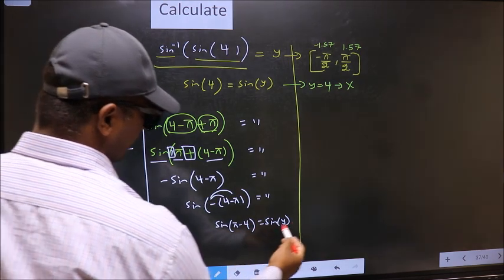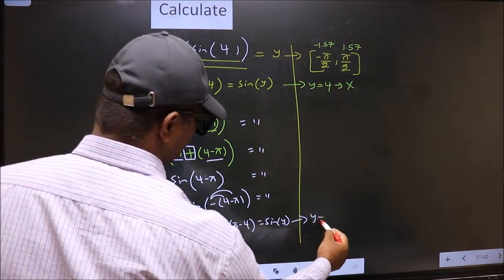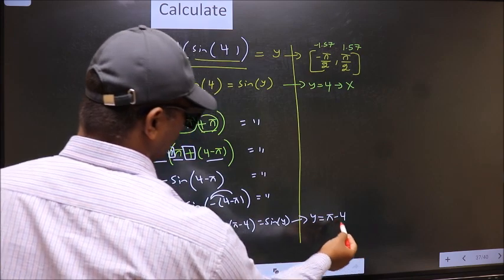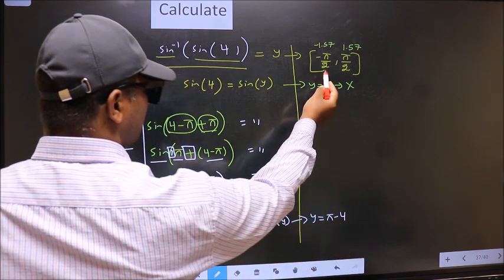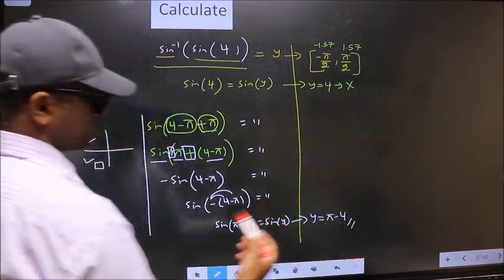Now comparing both sides, we get y to be pi minus 4. Does this lie in this interval? Yes. So this is our answer.